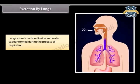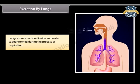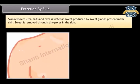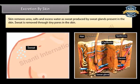Lungs excrete carbon dioxide and water vapor formed during the process of respiration. Skin removes urea, salts, and excess water as sweat produced by sweat glands present in the skin. Sweat is removed through tiny pores in the skin.